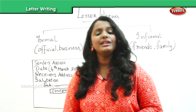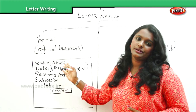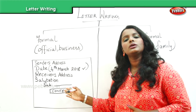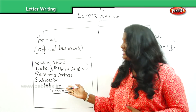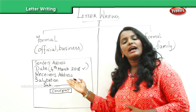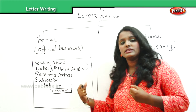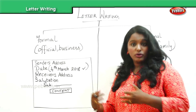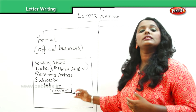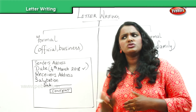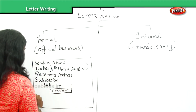In the content part, you need not reintroduce yourself, since you have already given your address. Just start with the issue or problem being faced by you, and go ahead with the action plan required or the purpose of writing. If you are expecting the commissioner to take action against an issue in your area, or you want to provide suggestive solutions, include that in the content. This can be broken into two or three paragraphs.